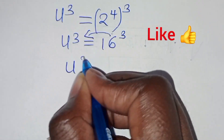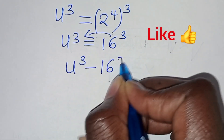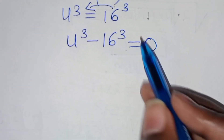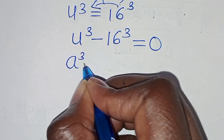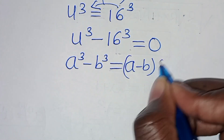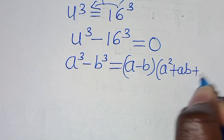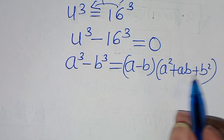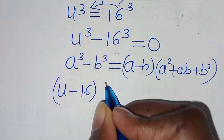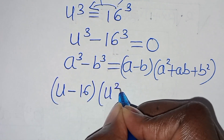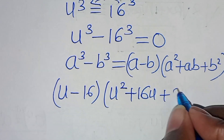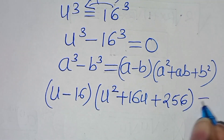The next step is to take 16 raised to the power of 3 to the left-hand side, so that we have u to the power of 3 minus 16 to the power of 3 equals 0. Now this is the difference of two cubes expressed as a to the power of 3 minus b to the power of 3, which we can express as a minus b times the sum. So let's apply this identity: we have u minus 16, then u squared plus 16u plus 16 squared, which is 256. This is equal to 0.